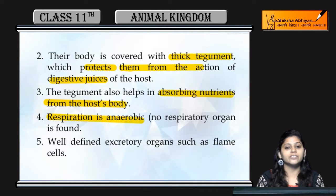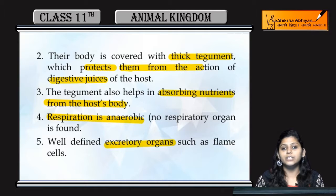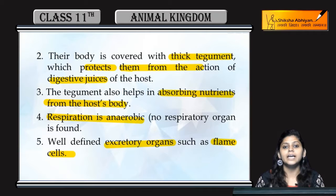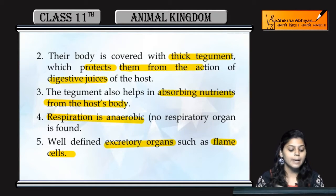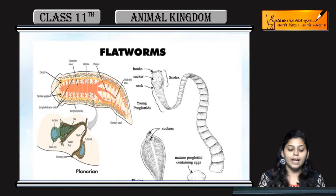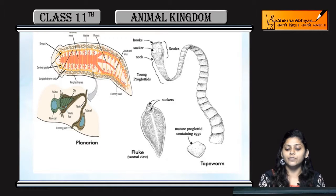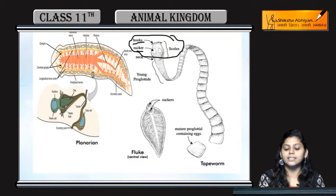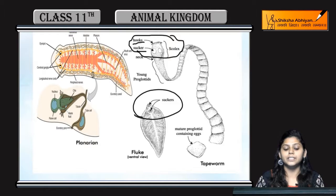As mentioned, respiration is anaerobic due to the absence of any respiratory organ. They do have an excretory organ — flame cells. Respiratory and circulatory organs are absent, but the excretory organ in the form of flame cells is present. Here you can see that the examples are tapeworm and liver fluke. In liver fluke, you can see that suckers are present.